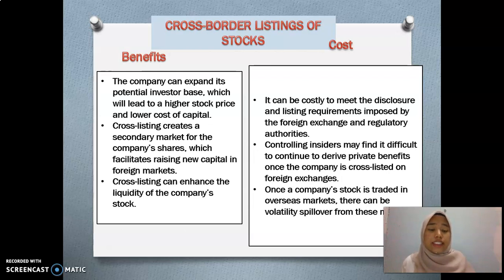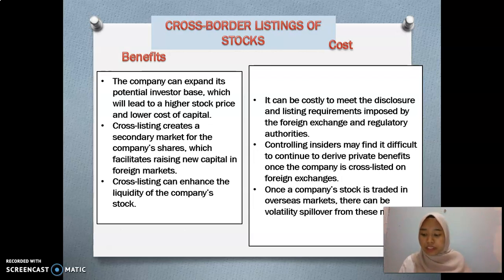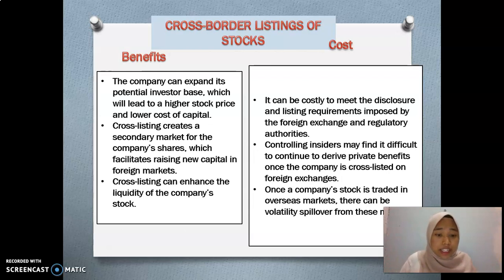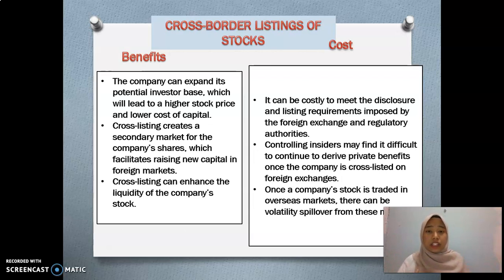For the costs, the first one is it can be costly to meet the disclosure and listing requirements imposed by the foreign exchange and regulatory authority, because every stock exchange has its own requirements and policies. The second cost is that controlling insiders may find it difficult to continue to extract private benefits once the company is cross-listed on a foreign exchange, because the company has a lot of investors from various countries. The third cost is that once a company's stock is traded in overseas markets, there can be volatility spillover from those markets, along with risks such as political risk.